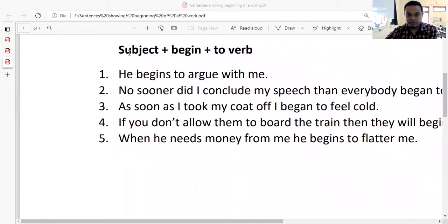Now we will have a look at the second rule, which is subject plus begin plus to plus verb. The first form of begin is begin, the second form is began, and the third form is begun. Begin is the main form. In simple present tense, the first form will be there. If the subject is he or she, it will become begins. For example, he begins to eat, he began to eat, he will begin to eat. Now we will have a look at the example sentences.